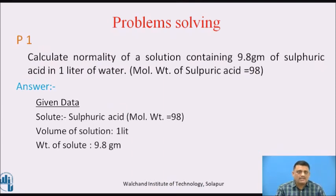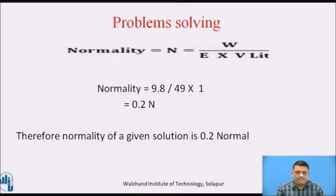After learning the theoretical part, we will now apply it. Problem 1: Calculate the normality of a solution containing 9.8 grams of sulfuric acid in 1 litre of water, where the molecular weight of sulfuric acid is 98. Given data: molecular weight = 98, volume = 1 litre, weight of solute = 9.8 g. Using N = W / (E × V): W = 9.8, and since sulfuric acid has 2 H⁺ ions, equivalent weight E = 98 / 2 = 49. Therefore, normality = 9.8 / (49 × 1) = 0.2 normal.